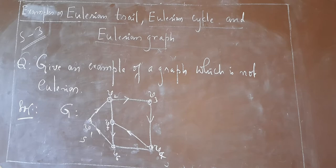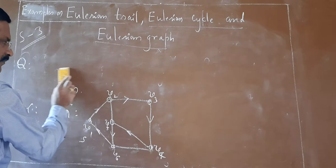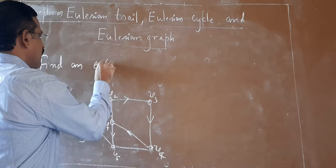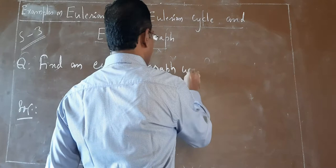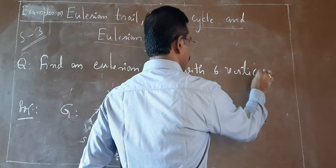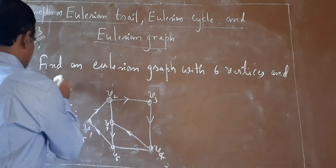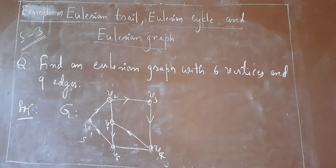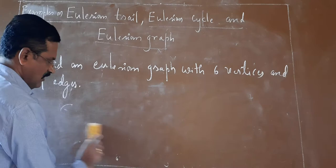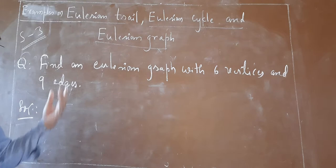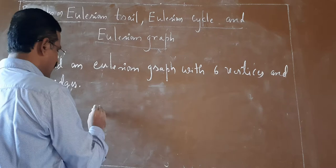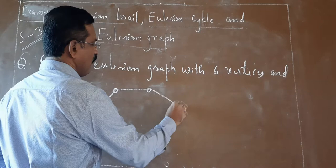Find an Eulerian graph with six vertices and nine edges. You may try to draw a graph which is an Eulerian graph containing six vertices and nine edges. I will try to draw it: let me take six vertices first — V1, V2, V3, V4, V5, V6. It is an Eulerian graph with six vertices, but edges are only six — we need nine edges.